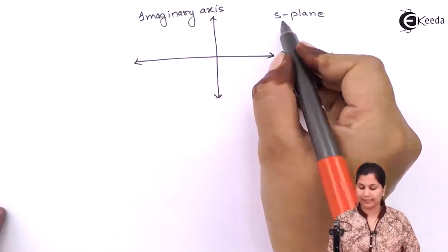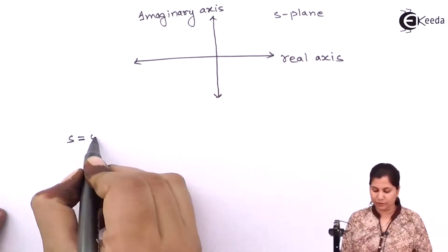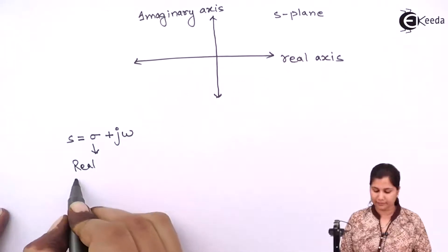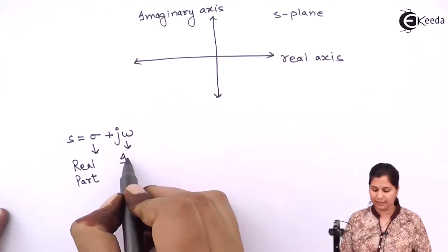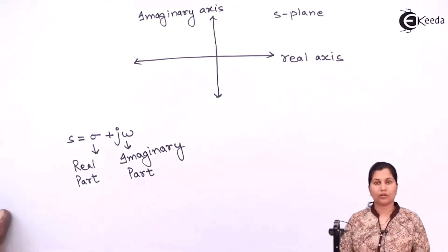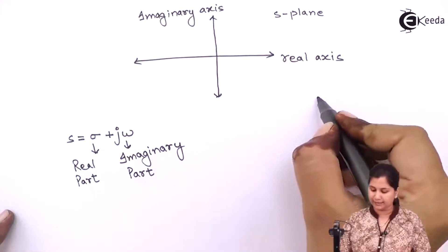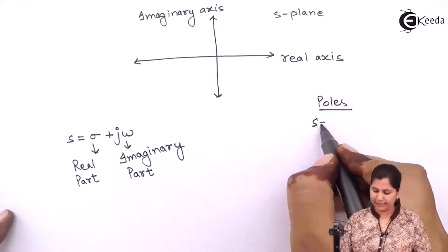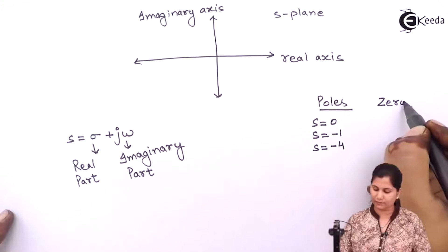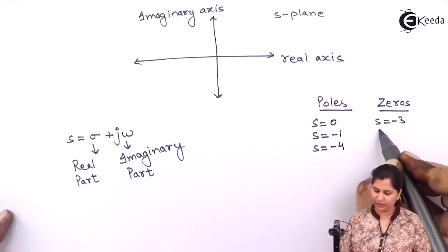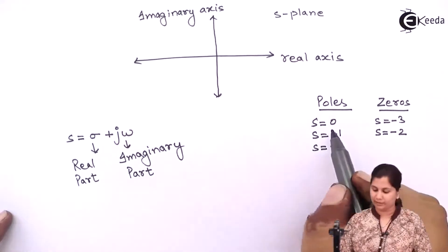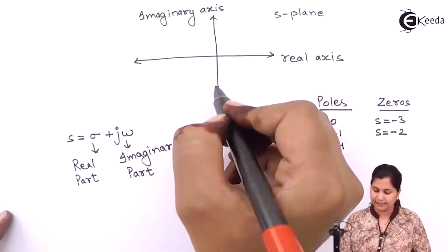This is the s-plane, with the real axis and the imaginary axis. We know that in the s-plane, s = σ + jω, where σ is the real part and jω is the imaginary part. In the question, the poles are s = 0, s = -1, and s = -4, and the zeros are s = -3 and s = -2. We represent the poles as a cross sign, so let's divide the real axis and imaginary axis.